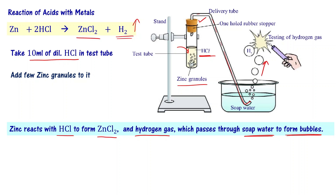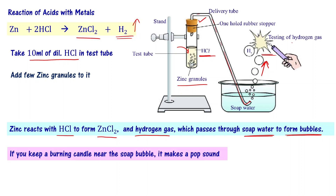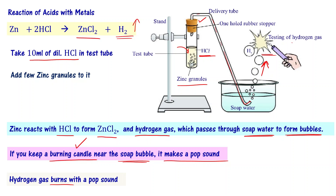If you want to test whether the gas coming out is hydrogen gas or not, you can use the soap bubbles. Bring a burning candle close to those bubbles. If you keep a burning candle near the soap bubble, the soap bubble breaks and makes a pop sound. Hydrogen gas reacts with the flame and burns, and while it burns, it makes a pop sound — please note this.